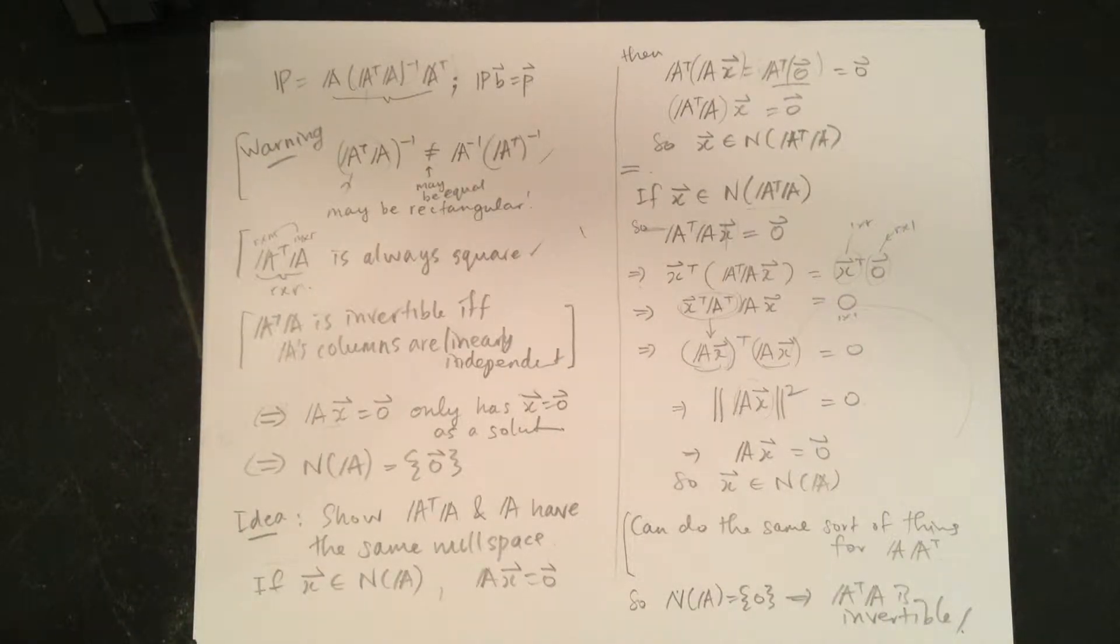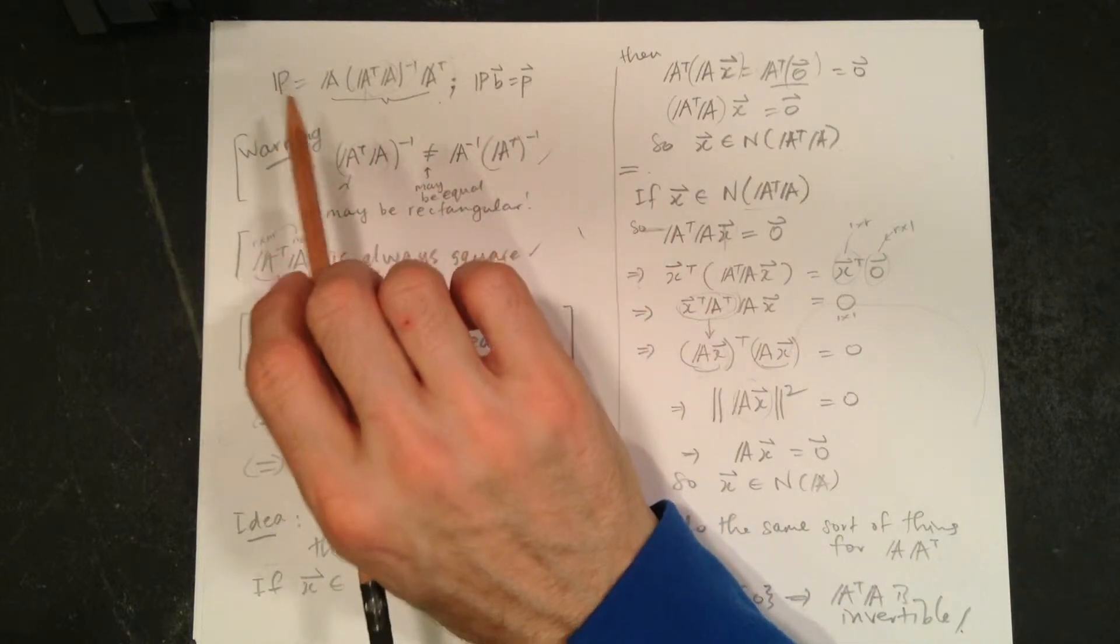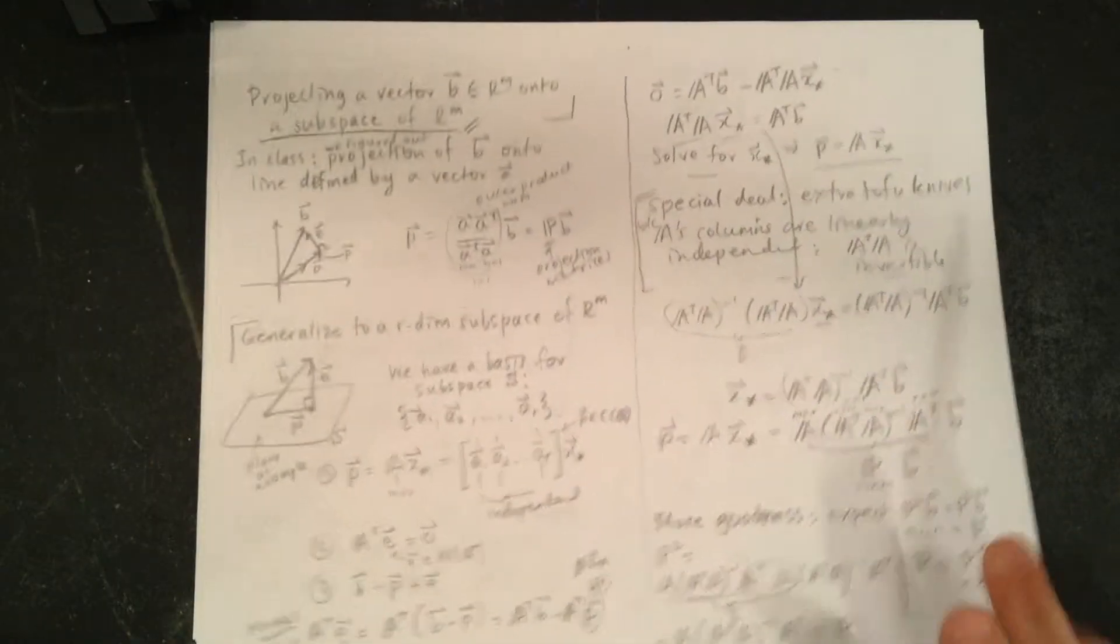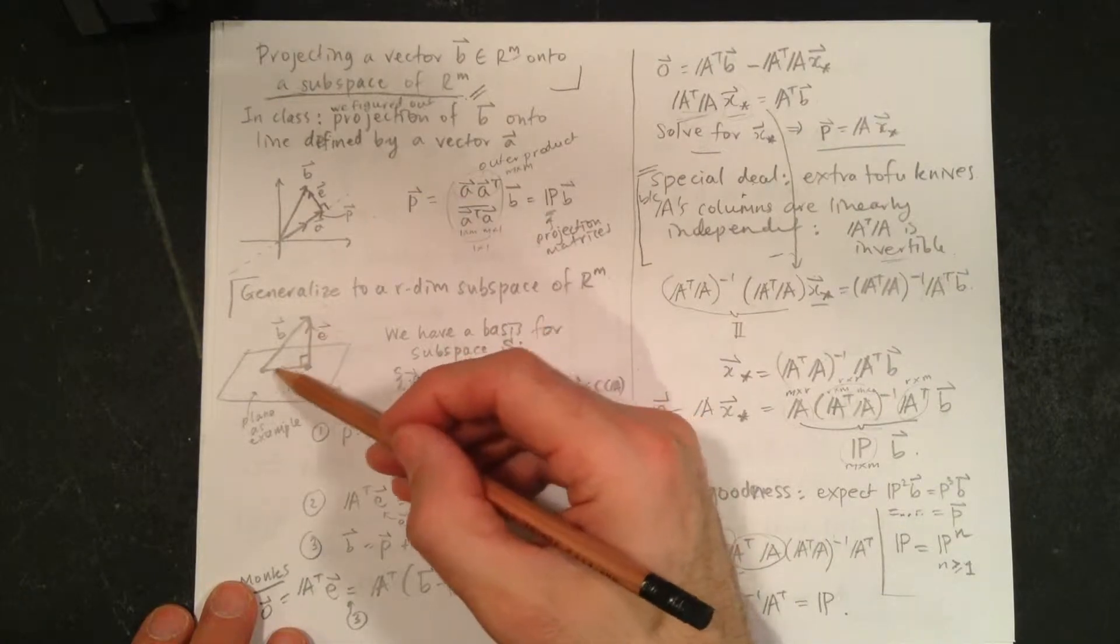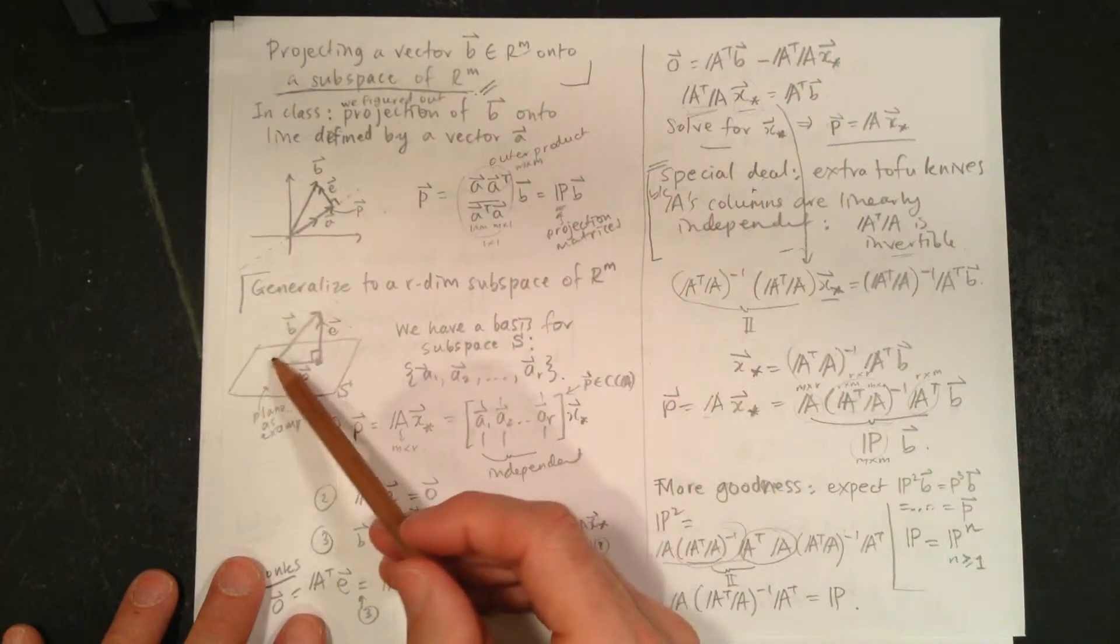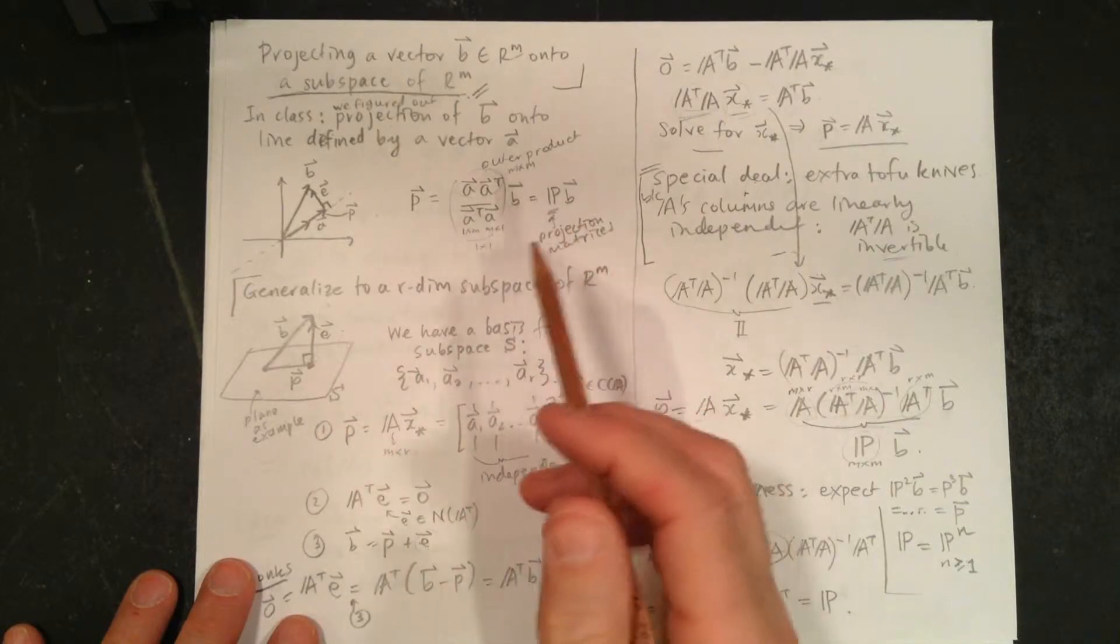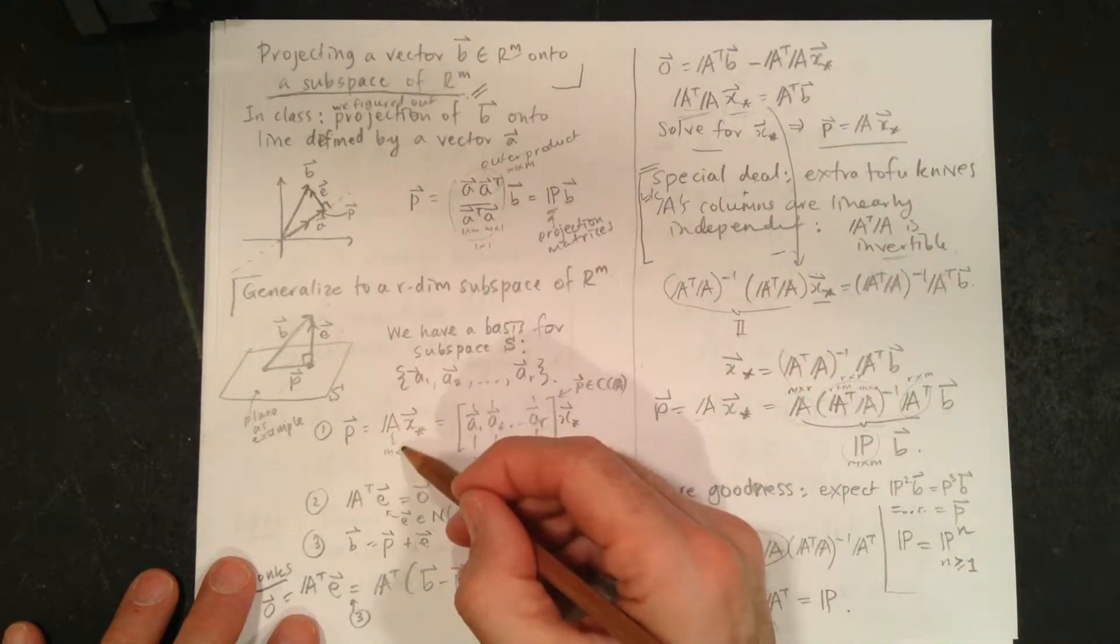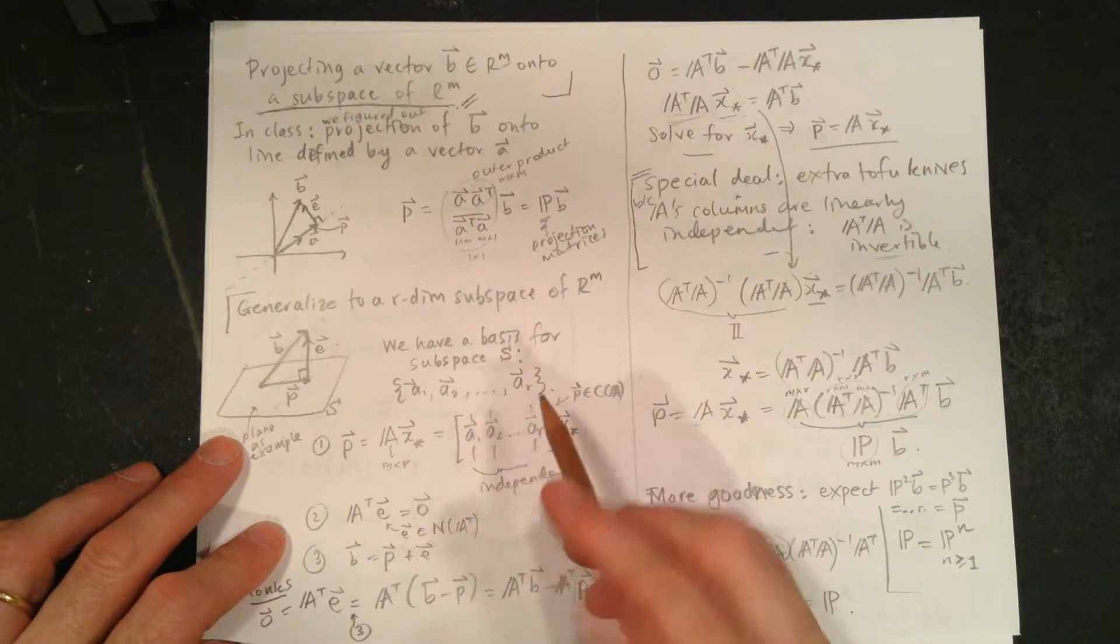Alright, so we're going to work through a calculation about A transpose A, and it's to do with this projection matrix which we've built in a previous video. For any subspace, here's the game: any subspace S, we've got some vector B and we're in R^m, and we're going to find the part of B that lives in S. This is easy once we know the normal equation. If we have a basis for the subspace S, then we're off. We line up the basis vectors and create this matrix A.